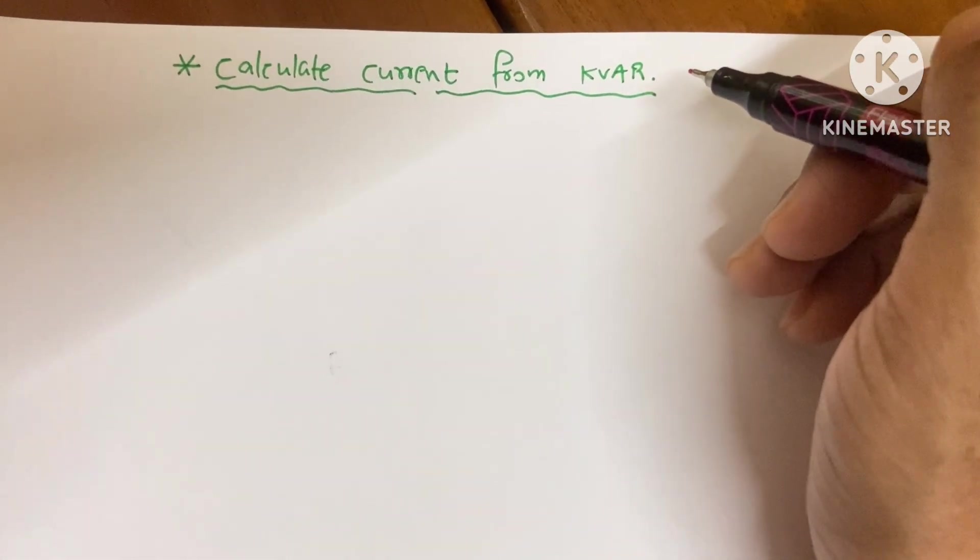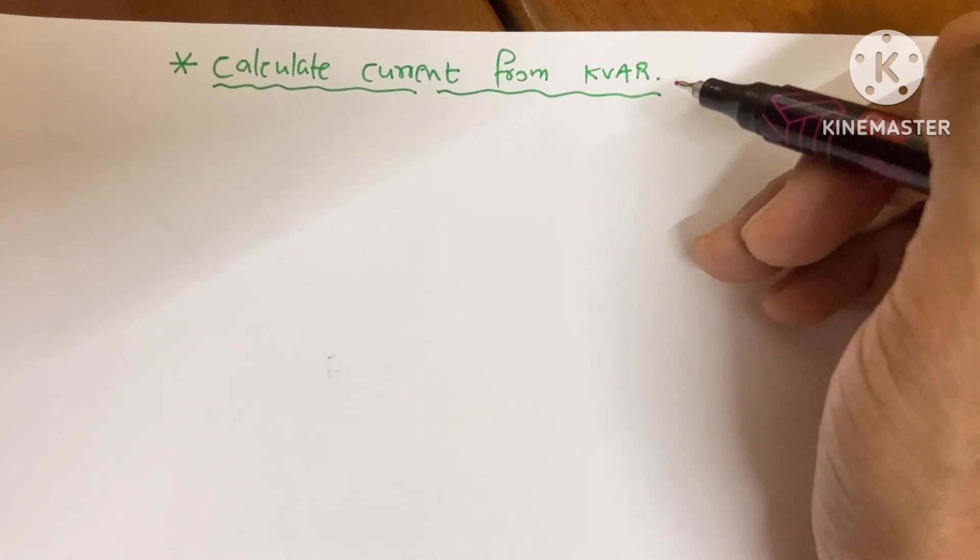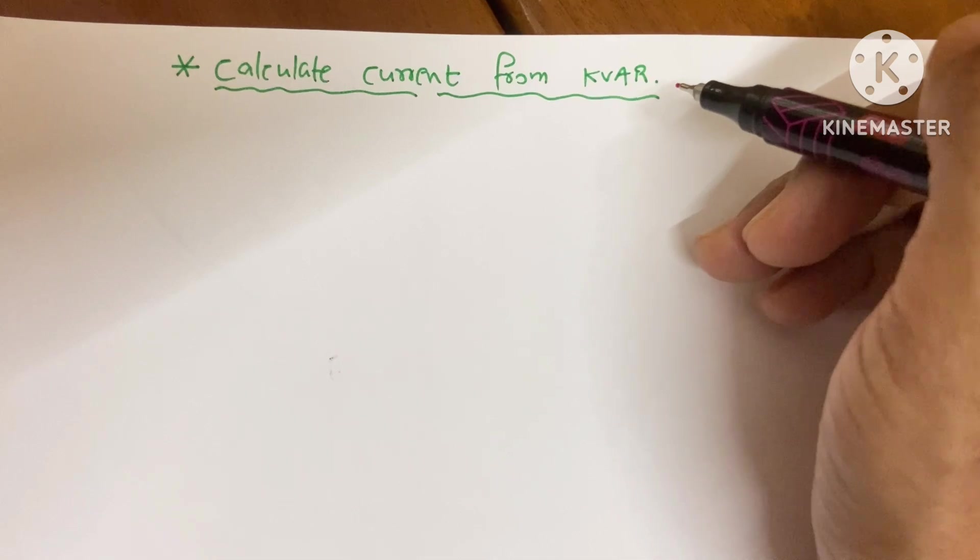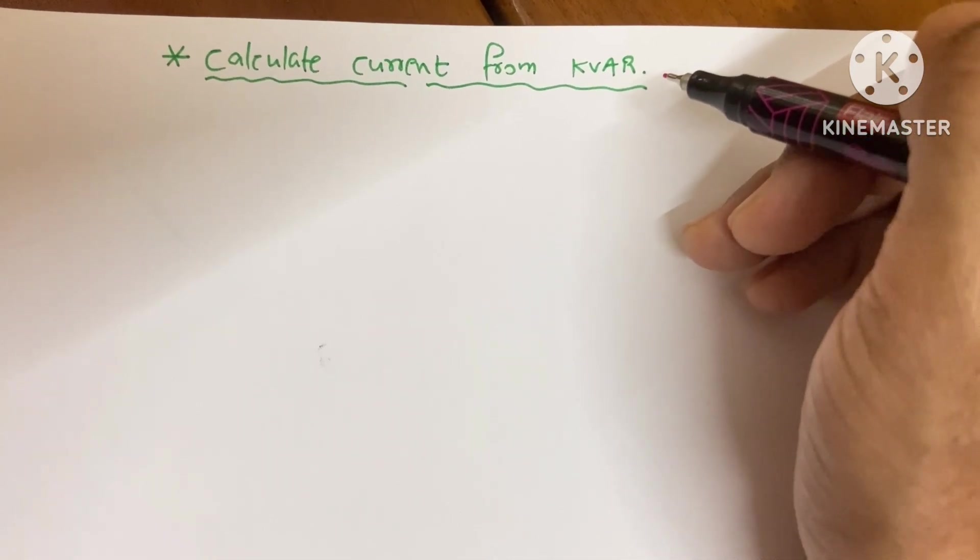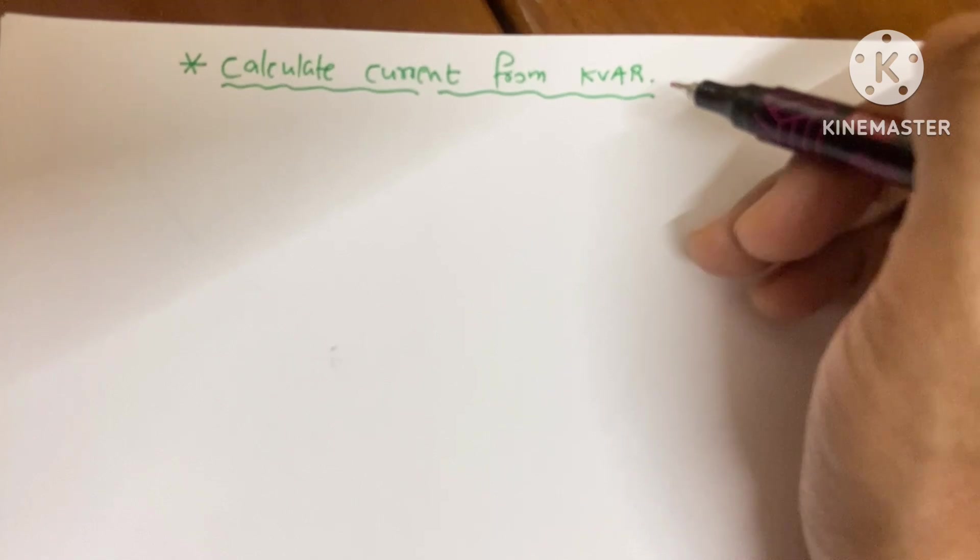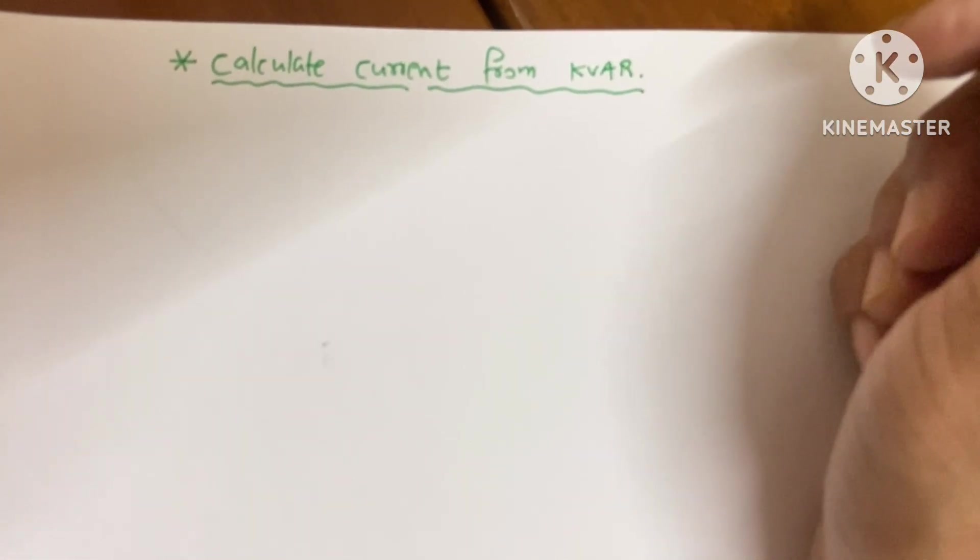We know that capacitor bank ratings are given in KVAR, and capacitor banks are always three-phase. So how do we find the current from a three-phase capacitor bank within a few seconds? Please don't skip this video.